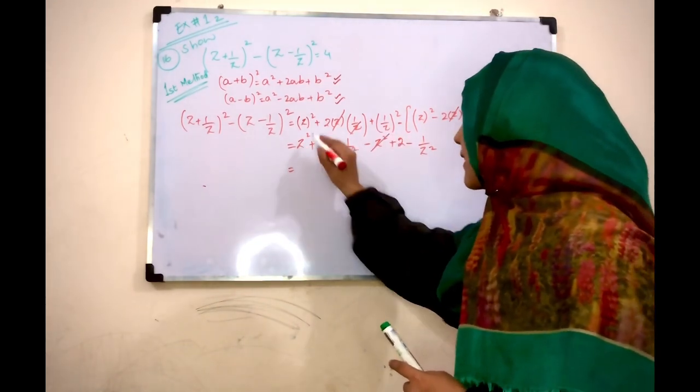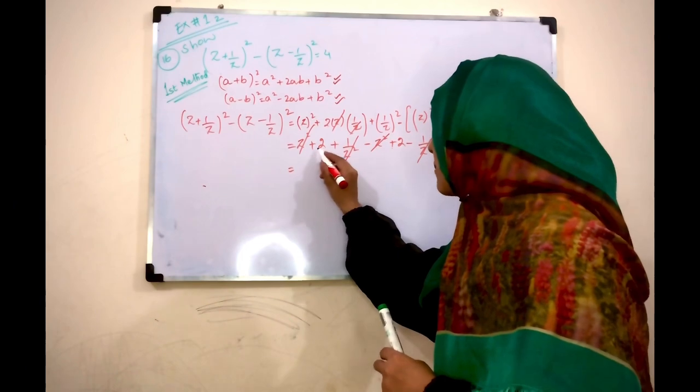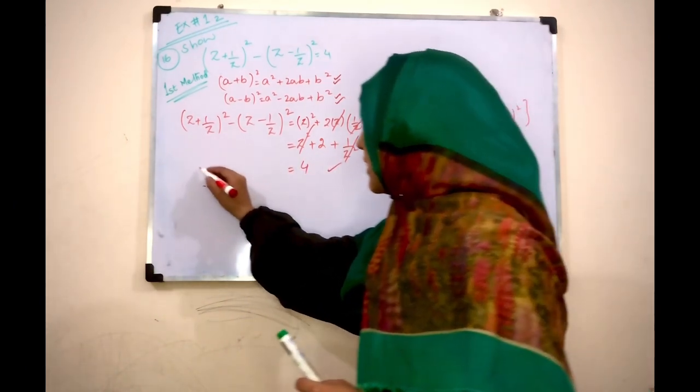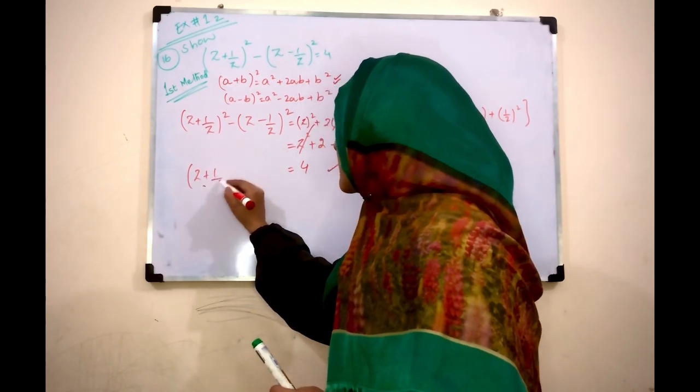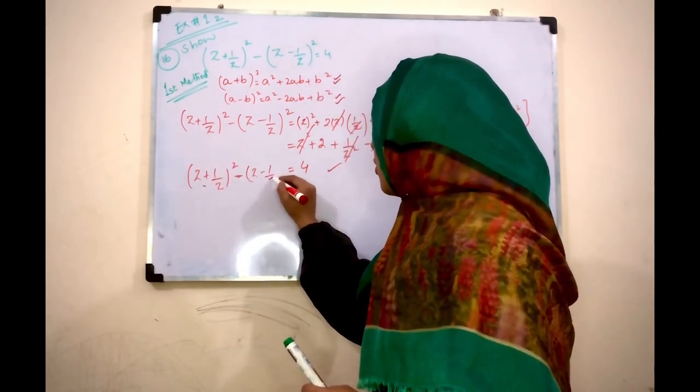Now what we have here: z² minus z² cancels. (1/z)² and (1/z)² cancel. Only 4 remains. Here we have this expression is equal to 4 shown.